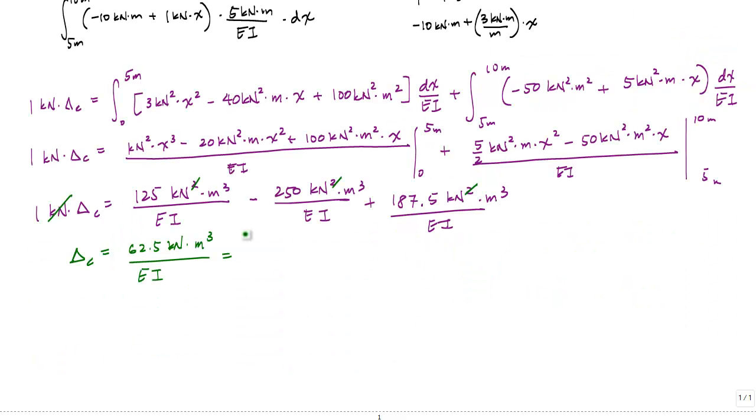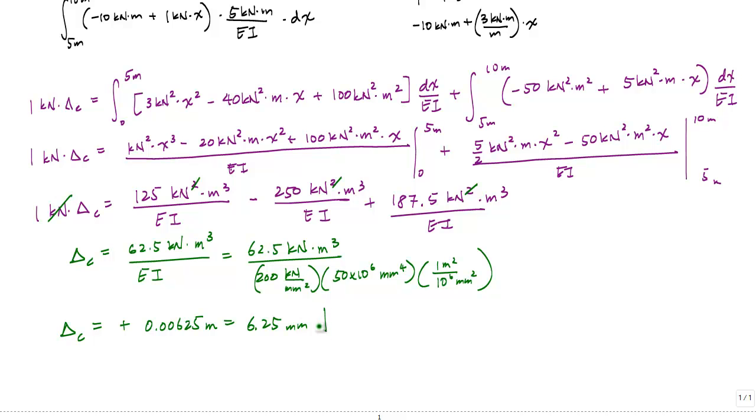And if I substitute for EI, we'll get that the displacement at C is equal to positive 0.00625 meters, which is 6.25 millimeters. And the positive indicates that the direction where we apply the unit virtual load is correct. And so this displacement of 6.25 millimeters is downwards at point C. This is my answer.